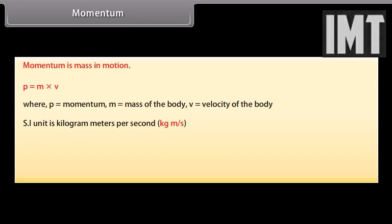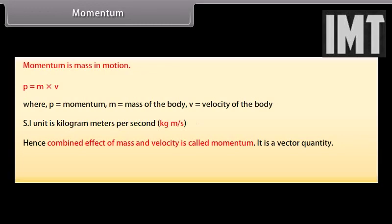Momentum is mass in motion. P equals M times V, where P is momentum, M is mass of the body, V is velocity of the body. SI unit is kilogram meters per second. Hence, combined effect of mass and velocity is called momentum. It is a vector quantity.